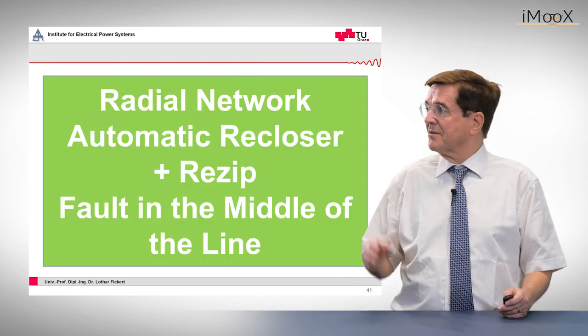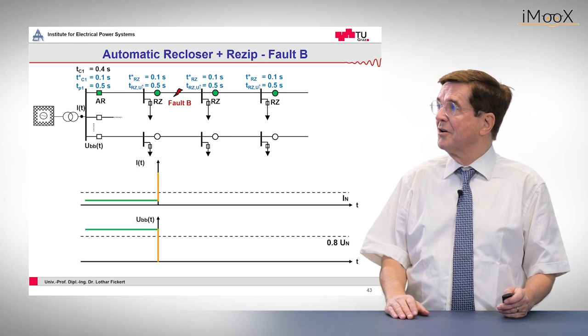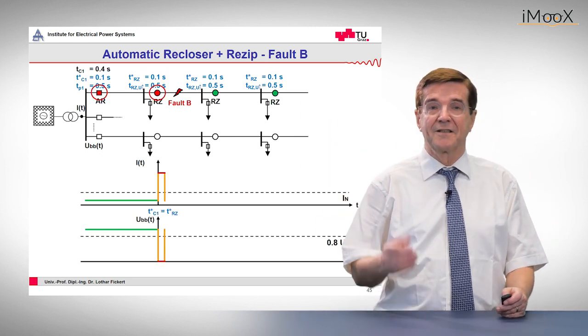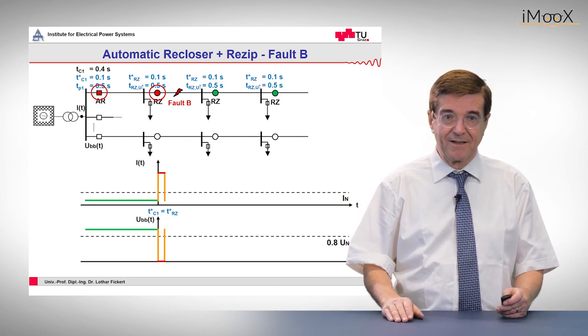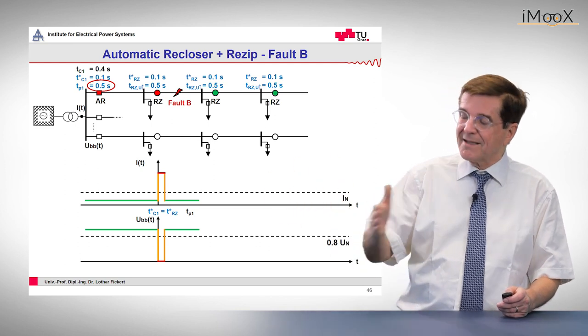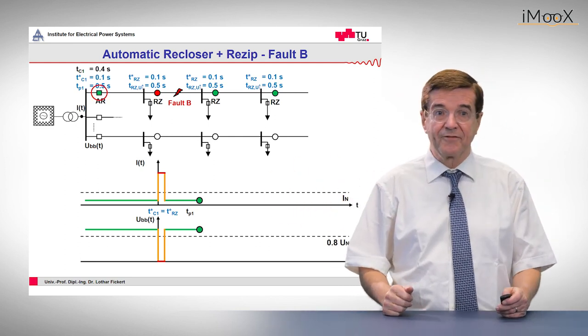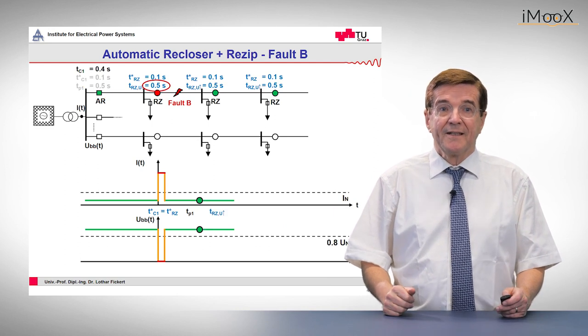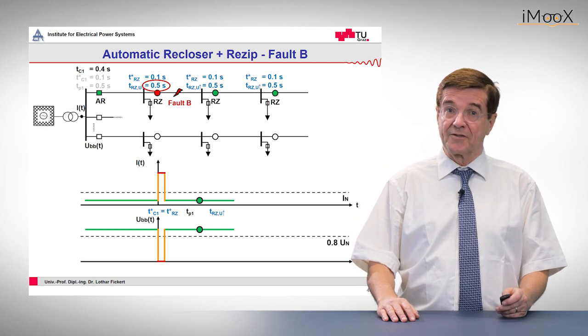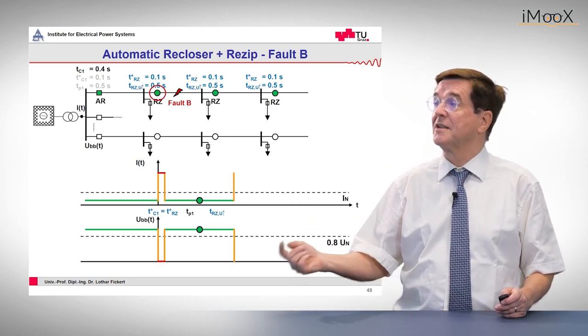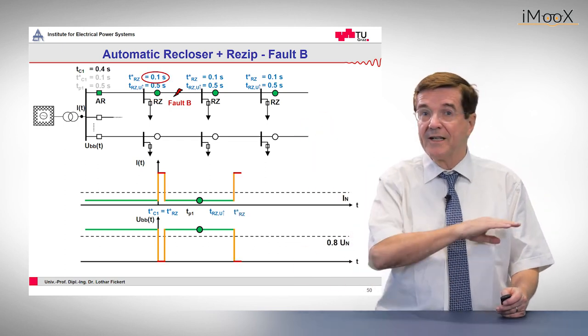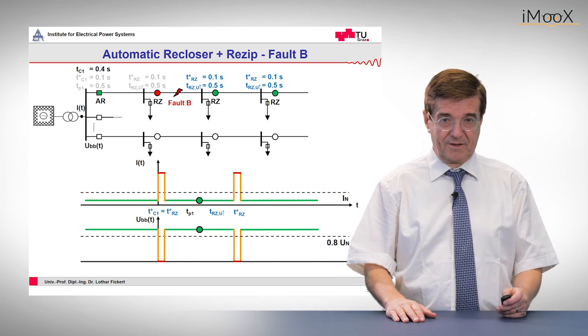Now we can see the same, to repeat it again, for a fault in the middle of the line. The fault occurs and all afflicted auto reclosers trip immediately. And now after a time of 0.5 seconds, the recloser and the passing on of the voltage starts again from the left side. The next re-zip auto recloser sees the incoming voltage. After half a second it closes, but unfortunately it closes on fault. Again the current goes up, the voltage goes down, you trip out immediately, and that was it.